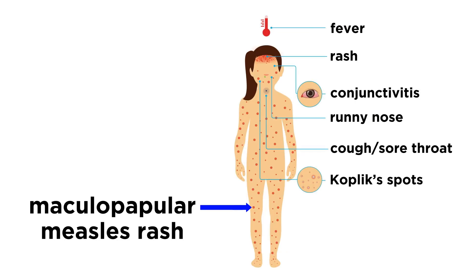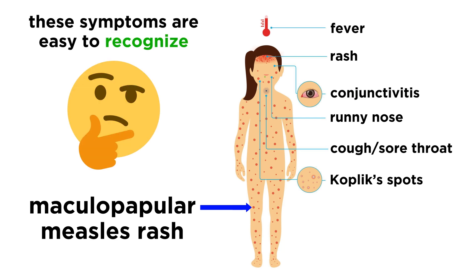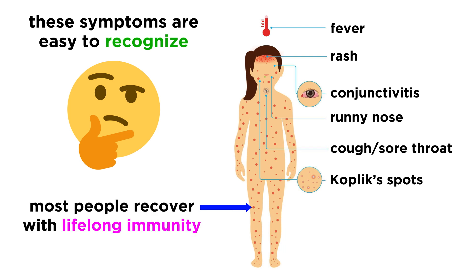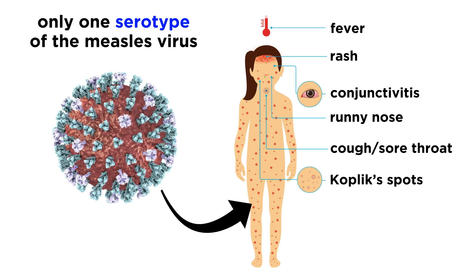Ultimately, this multi-system attack causes the characteristic maculopapular measles rash, along with fever, cough, and conjunctivitis. Compared to other viruses, the symptoms of measles are fairly easy to recognize, so laboratory tests aren't always needed for an official diagnosis. Most people recover from measles and develop lifelong immunity to the virus, though some may develop pneumonia or encephalitis, which can be deadly complications. It's also worth mentioning that there is only one serotype of the measles virus, and as luck would have it, it infects only humans.